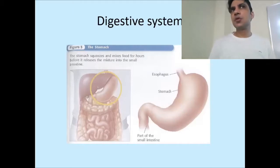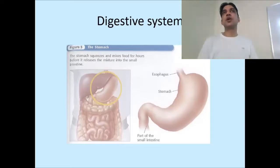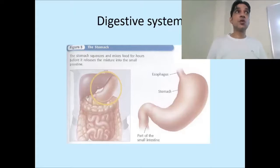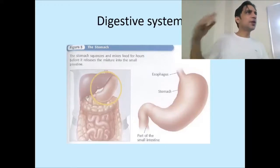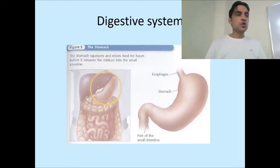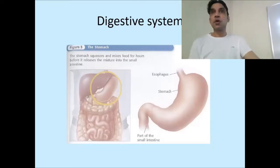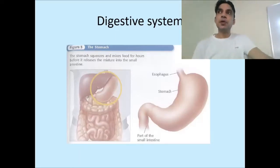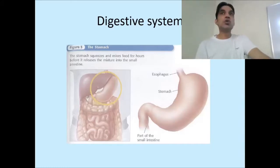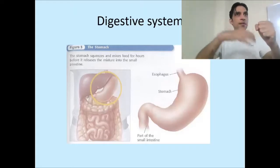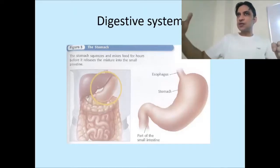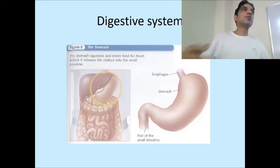The pancreatic juice brings enzymes: lipase, amylase, and trypsin. These are responsible for the digestion of the major food ingredients. Lipase digests fats, amylase digests carbohydrates, and trypsin digests proteins. Proteins were already partially digested in the stomach, but trypsin completes that digestion. The chemicals from the pancreas enter the first part of the small intestine, mix with the chyme, and start digesting everything.